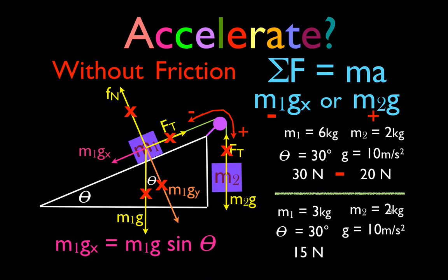We left M2 the same. M2 is 2 times g is 10, which is 20. That means we've decreased M1GX, left M2 the same. M2 is now greater than M1GX, and these two objects are now going to accelerate in the positive direction.